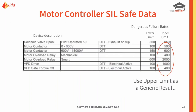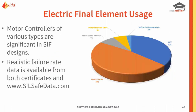Here's a snapshot of SIL Safe Data for motor controllers. It's important to note — and not surprising — that just like with valves, all motor controllers are not created equal; they have different sets of values depending on voltage differences, whether it's a smart device or mechanical device. You can see the motor overload relay has different values — mechanical versus smart — with different lower and upper limits. If you have a mechanical motor overload relay and no other failure rates, this gives you the dangerous undetected failure range — for example, between 100 and 400. It's a great sanity check tool.